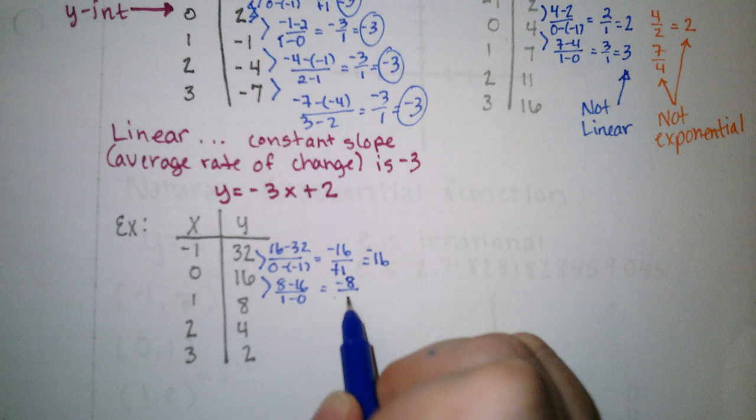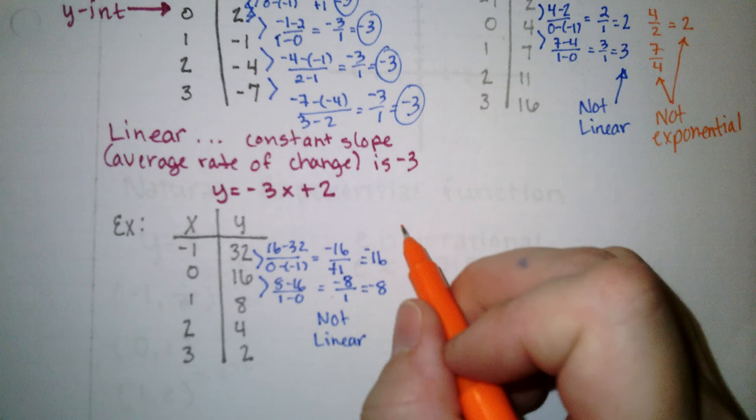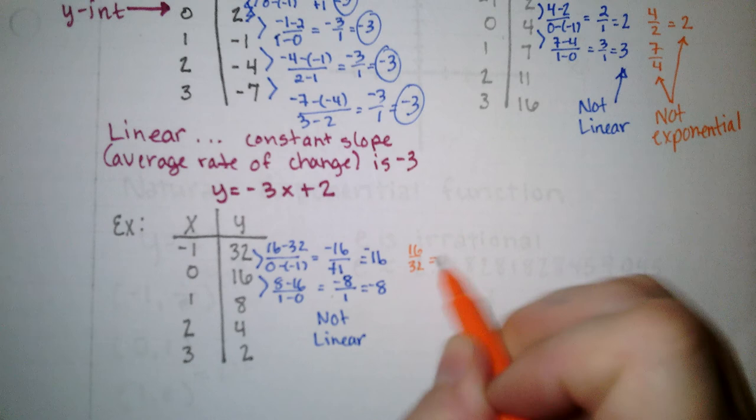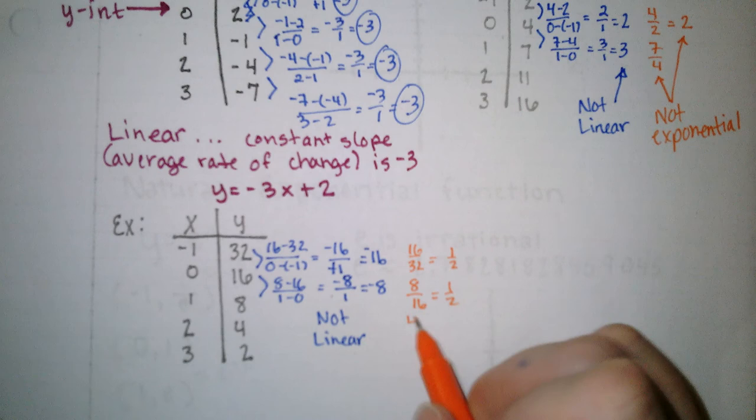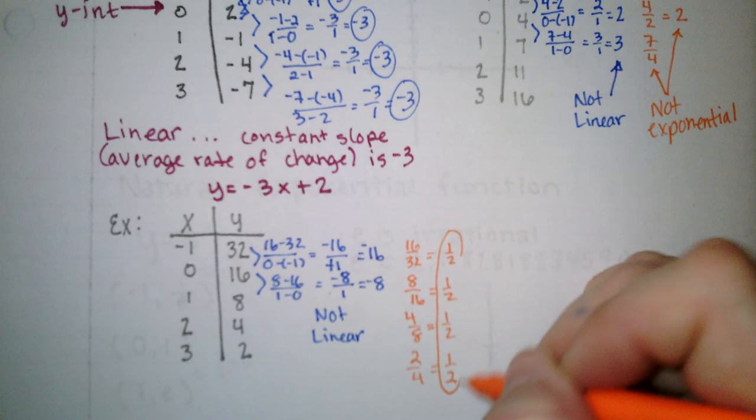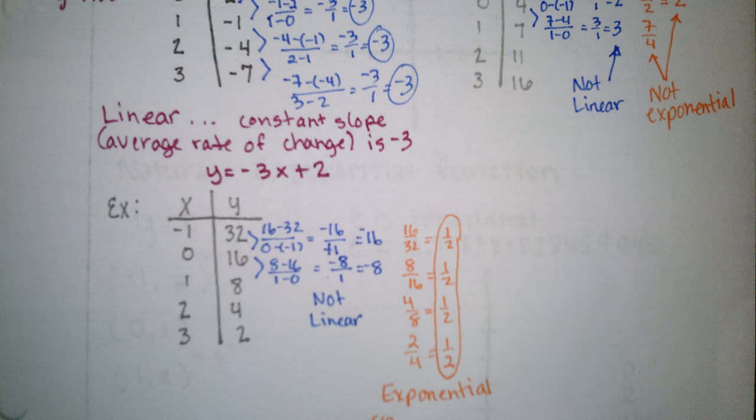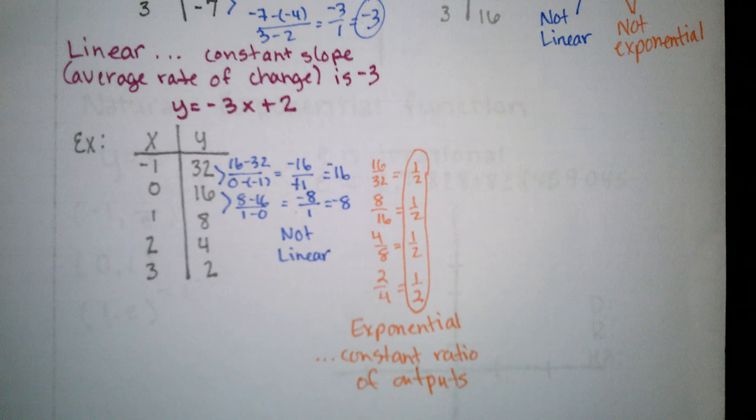So then we'll check the ratio of outputs. So 16 over 32 is 1 half. 8 over 16 is 1 half. 4 over 8 is 1 half. 2 over 4 is 1 half. So we know that it's exponential because the ratio of the outputs is constant. But this tells us even more information than that. It's exponential because there's a constant ratio of outputs. And we can tell that the base of the exponential function is going to be 1 half.